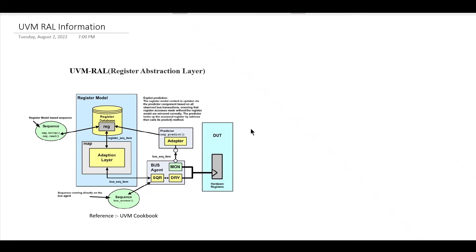Hello and welcome. In the last video we had a discussion about the introductory part of UVM RAL. We discussed why backdoor access is faster compared to frontdoor access, and we also discussed the RAL model which consists of register database and adapter layer, including the responsibility of the adapter layer, the predictor, and different types of predictions.